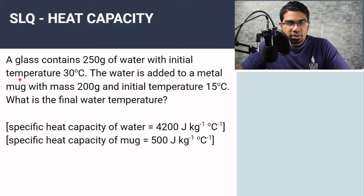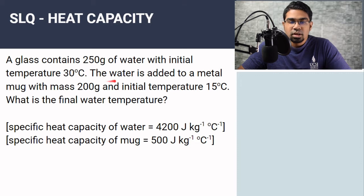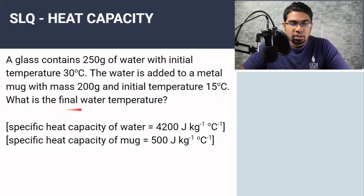When they ask questions on heat capacity, it's very common for them to ask questions on the final temperature of a substance when two substances are mixed. Let's look at an example here. A glass contains 250 grams of water with an initial temperature of 30 degrees Celsius. The water is added to a metal mug with mass 200 grams and initial temperature 15 degrees Celsius. What is the final water temperature?